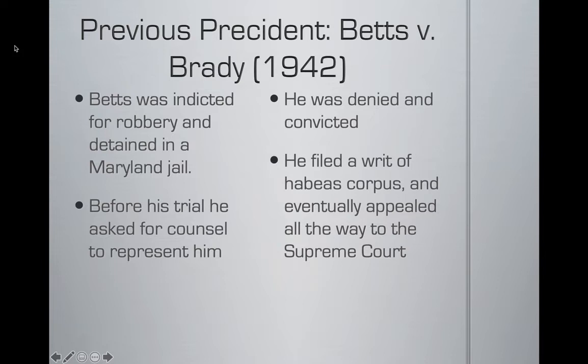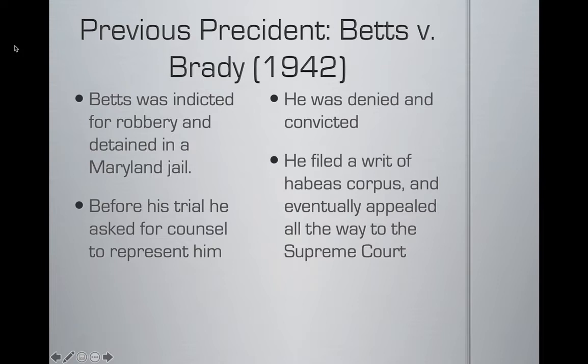Once this happened, he felt he was wronged. He went to seek representation in prison, and he and his attorney filed what's called a writ of habeas corpus. This is a legal document requesting the appellate court to review his case and hopefully grant him a new trial based on the grounds that his rights were violated.